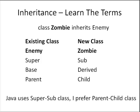Just don't mix and match the terms. Parent goes with child. The Java language uses the terms super and subclass to describe inheritance. I prefer the terms parent and child because they match the term inheritance. We all understand a child inherits things like hair and eye color from a parent. Much like the zombie class, the child, inherits variables and methods from enemy, the parent class.